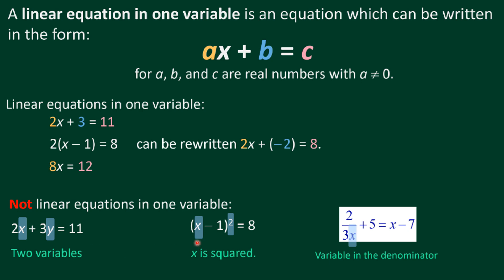Another example: the quantity x minus 1, squared, equals 8. This is not a linear equation — even though it has one variable — because of the squared exponent. When the variable is squared, it becomes quadratic, which is a different lesson. Remember: for it to be linear, x must have an exponent of 1 only — no exponents of 2, 3, or 4.